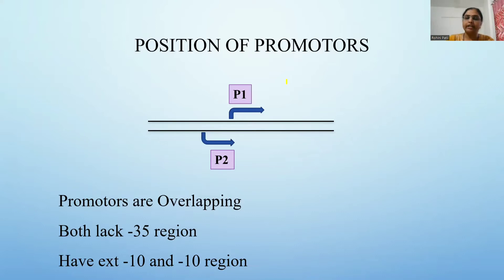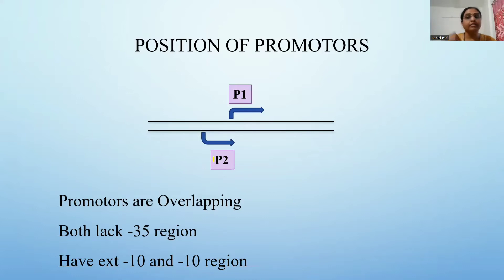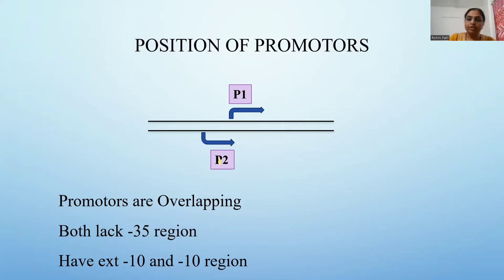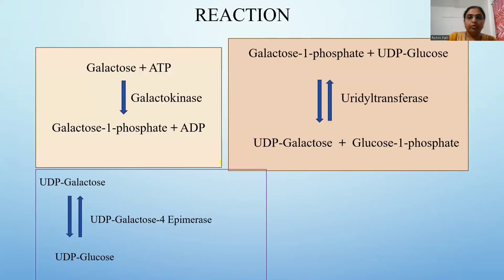P1 and P2 are not active at the same time. When galactose is used as a carbon and energy source, the P1 promoter is active. When galactose is used for cell wall synthesis — meaning other sugars are present and only low-level expression is needed — the P2 promoter is active.